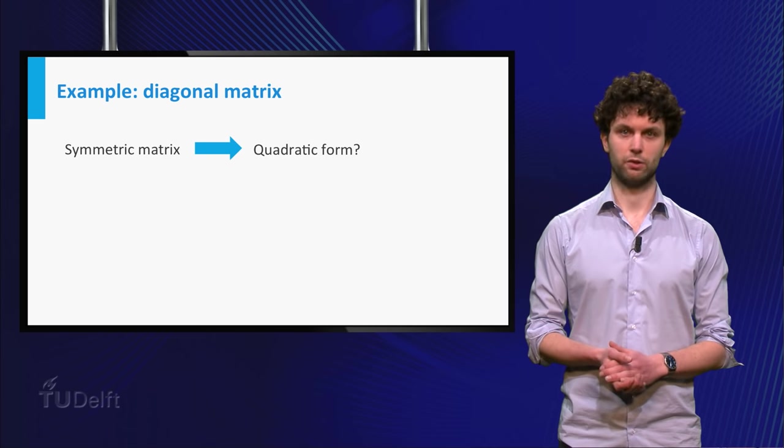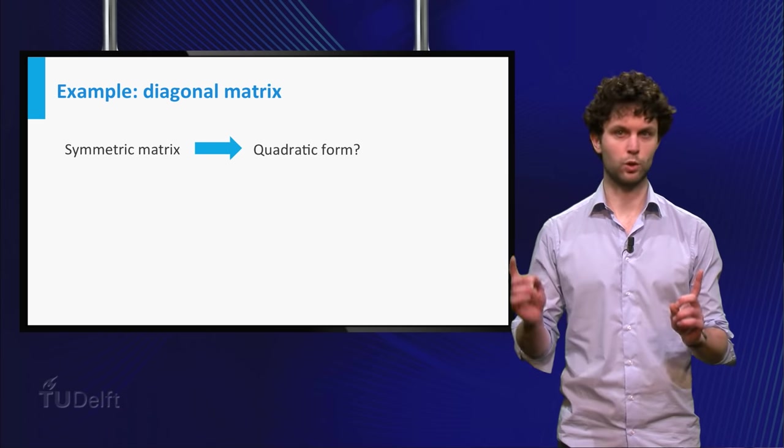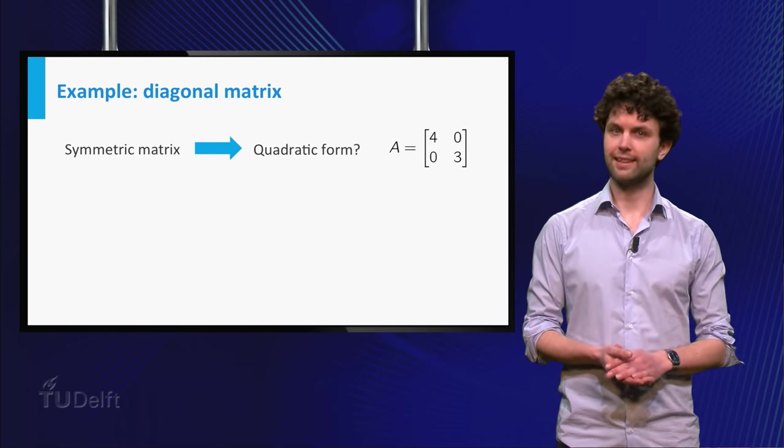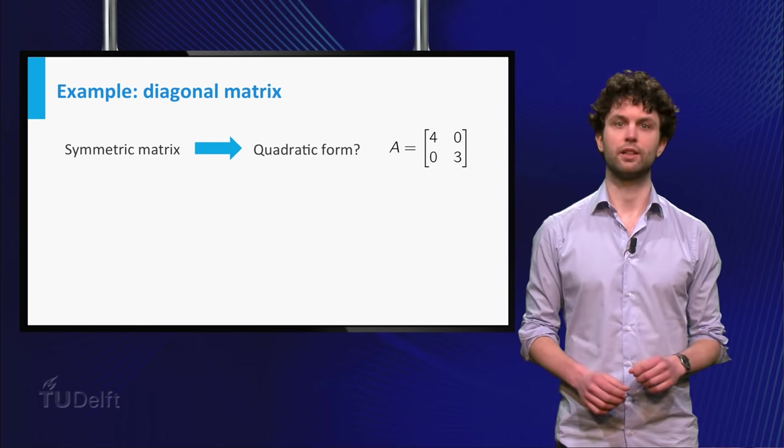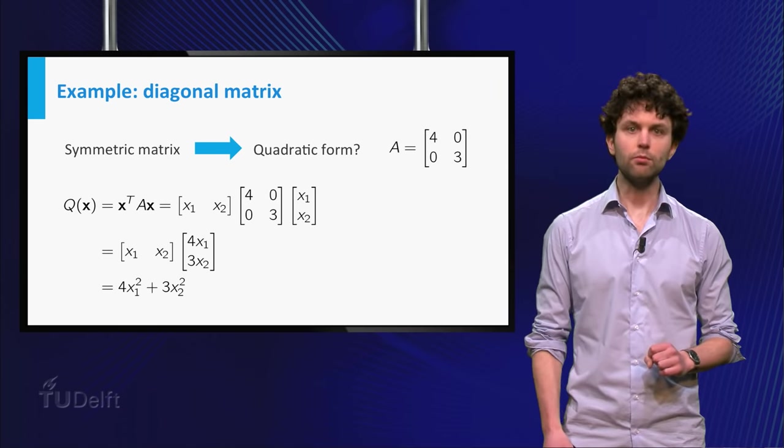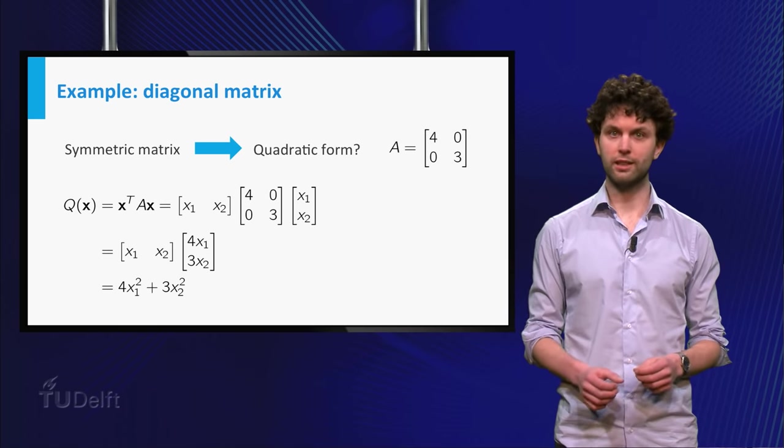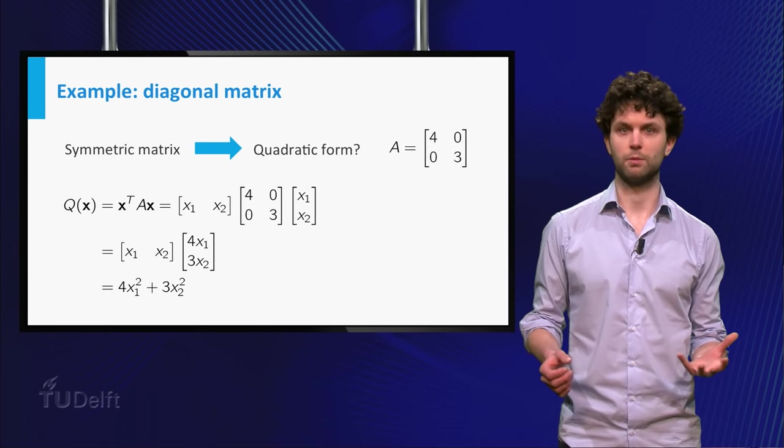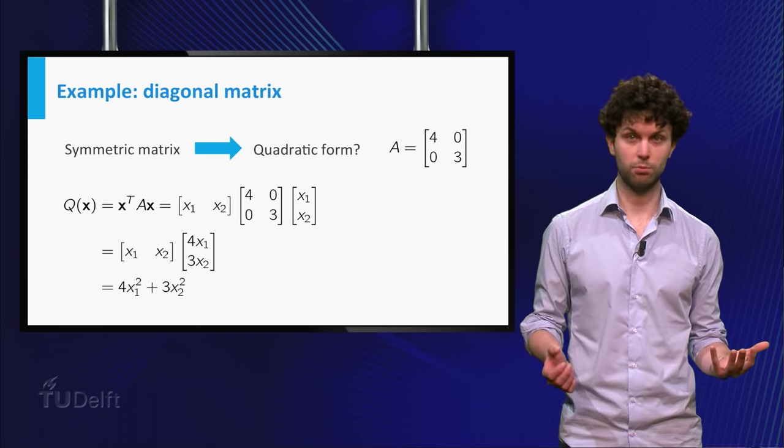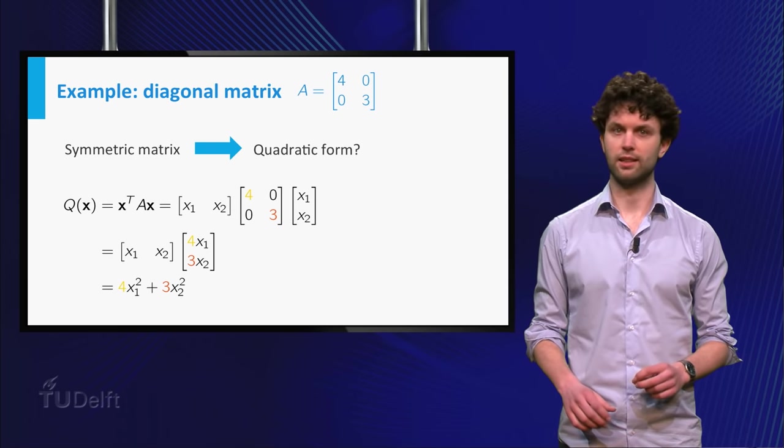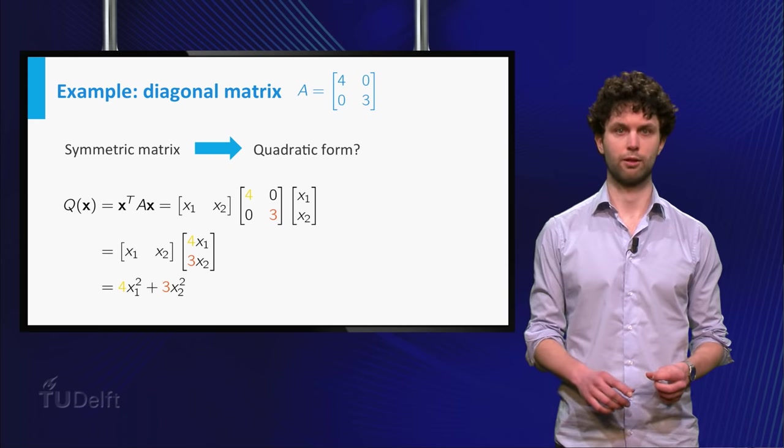Let's now investigate the connection between the symmetric matrix A and its corresponding quadratic form. First, we let A be a diagonal matrix, for instance this one. From the rules of matrix vector multiplication it follows that the quadratic form becomes 4 times x₁ squared plus 3 times x₂ squared. You see that the diagonal elements appear as coefficients in the quadratic form.